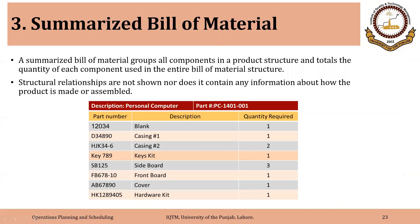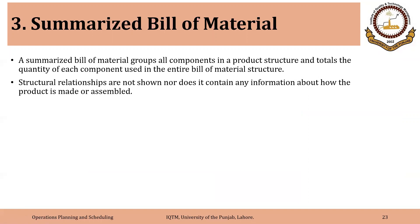The third type of bill of material is the summarized bill of material. A summarized bill of material groups all components in a product structure and totals the quantity of each component used in the entire bill of material structure. It contains both the components and the quantity.